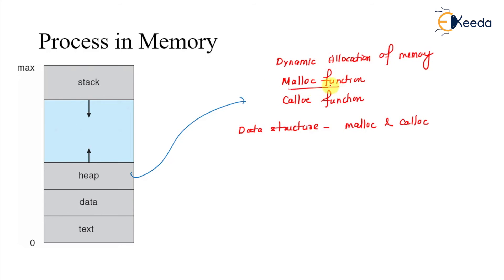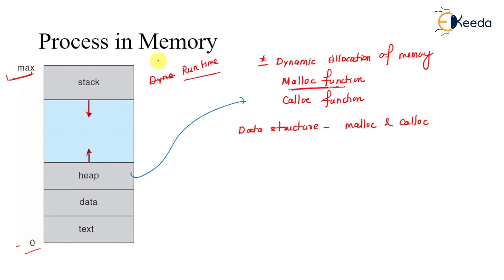The heap is the area where dynamic allocation of memory happens at runtime. Because we don't know the exact length in advance, two arrows indicate the sign of growth for both the stack and heap. In this diagram, zero is at one end and max is at the other, representing the address range. Text and data are the two static parts, while stack and heap are the runtime parts. That's all for this discussion.